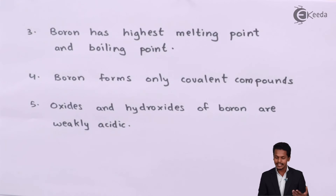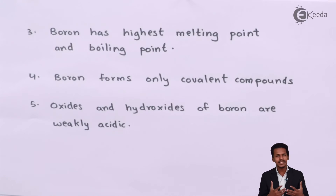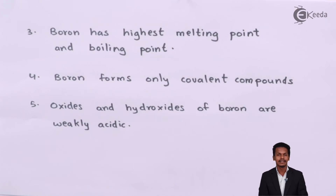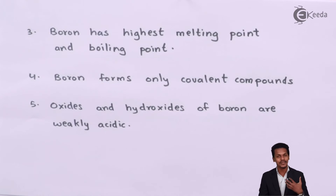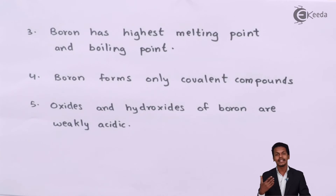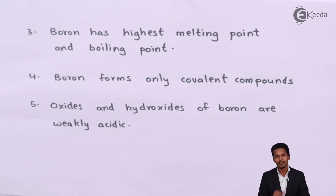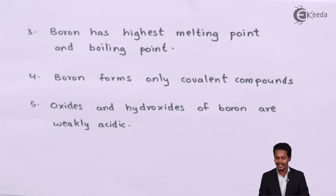The third point is that boron has the highest melting point and boiling point in group 13. This is because of its smaller atomic size and higher electronegativity, making boron a very hard element. Since it is very hard, more energy is required to melt or boil it. Aluminum, being a softer metal, has a lower melting and boiling point compared to boron.